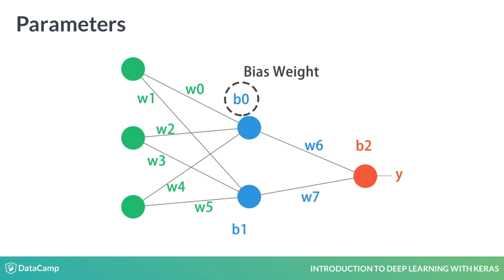During feedforward, our input gets transformed by weight multiplications and additions at each layer. The output of each neuron can also get transformed by the application of what's called an activation function.